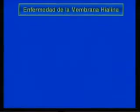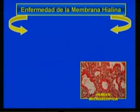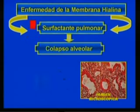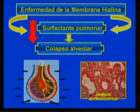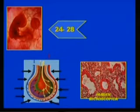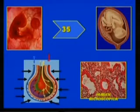Hyaline membrane disease, also called idiopathic respiratory distress syndrome, presents when there is insufficient pulmonary surfactant. The tiny alveoli collapse after each breath when this substance is deficient. Its production begins in the fetus between 24 and 28 weeks of gestation, and by approximately 35 weeks an adequate amount of surfactant has been produced.